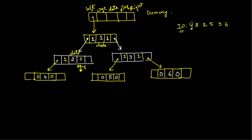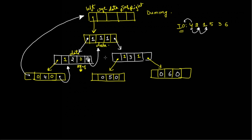For node 4, the successor is 2, so its right pointer points to node 2. For node 2, ltag is 1 and rtag is 0, so the right space is empty and is used to store the successor, which is 1 — so it points to node 1. For node 5, ltag=0 and rtag=0, so both pointers are null. The predecessor of 5 is 1 and the successor is 3, so the left pointer points to node 1 and the right pointer points to node 3.